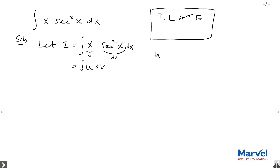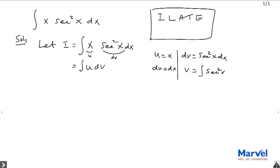So, what is u equal to? u equal to x and dv equal to secant square x dx. So what is du equal to? du equal to dx, and v equal to integral of secant square x dx, which is equal to tan x. Now substitute in the formula: u v minus integral v du.